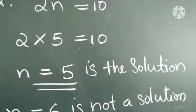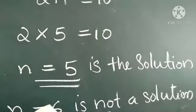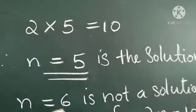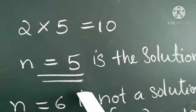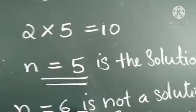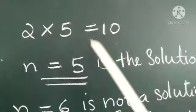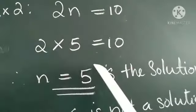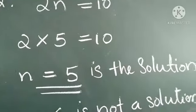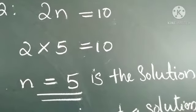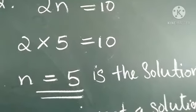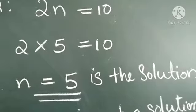So you understood the solution of an equation. Solution means the value of the variable in the equation is called the solution. Solving means finding the value of the variable. Here we found the value of the variable, or the value of the unknown in the equation. This process is known as solving.